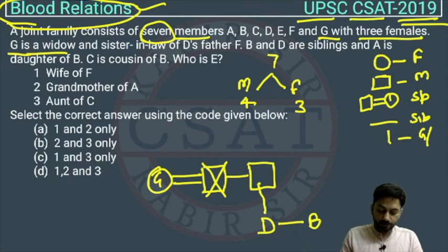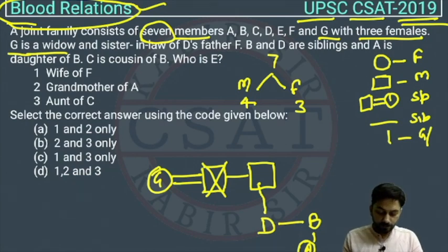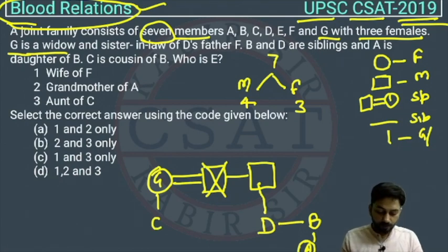A is the daughter of B, so A is a girl and comes here as daughter of B. C is a cousin of B, so C will come on this side. Because there are only seven members, in reasoning questions we assume C will come as a child of G. So C becomes the cousin of B, but the gender of C, D, B, or A has not been given.